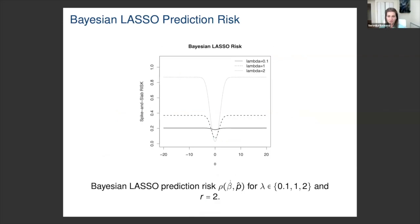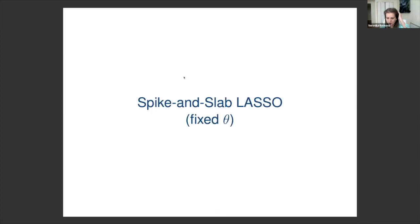This can also be seen from a plot of the predictive risk, with beta on the x-axis and risk on the y-axis, showing the Bayesian LASSO risk for various choices of lambda. The risk at zero is small for large lambda, while the risk at non-zero values is small for small lambda. As we increase lambda, we decrease the risk at zero but increase the risk for non-zero values — that's the fundamental conflict. This is a good place to appreciate the benefit of two-point mixture priors for sparse situations.